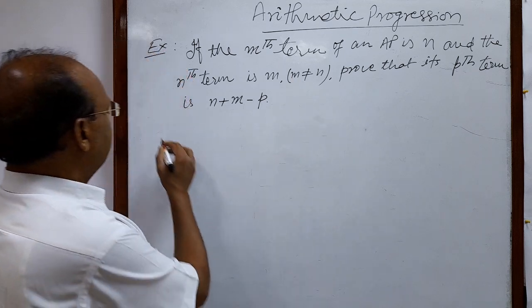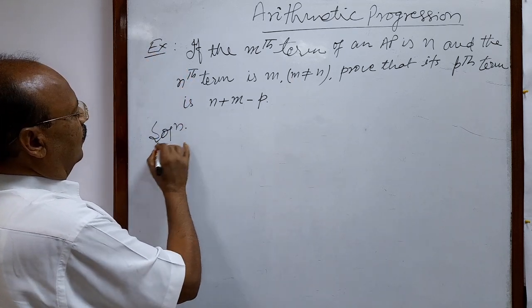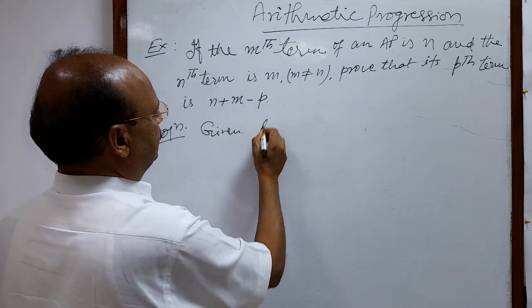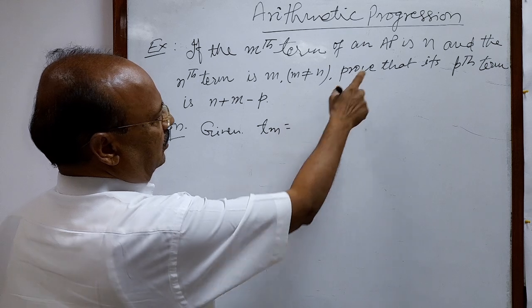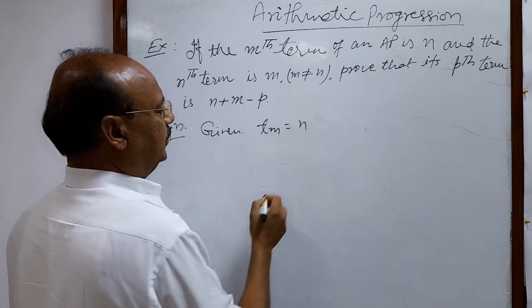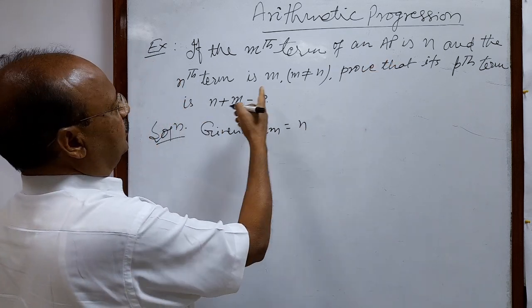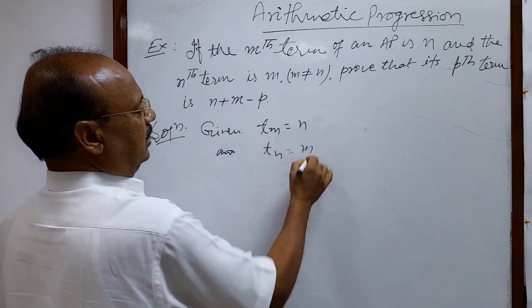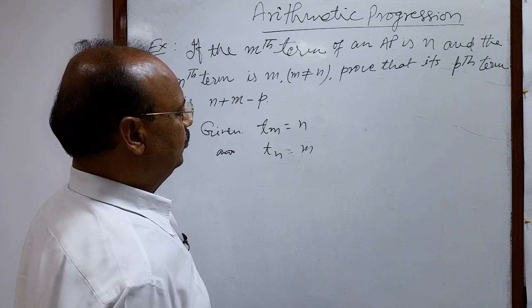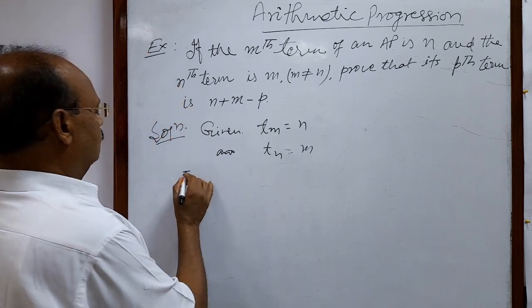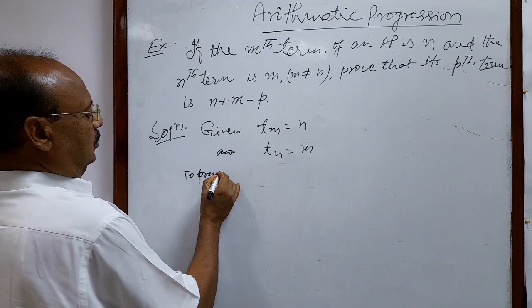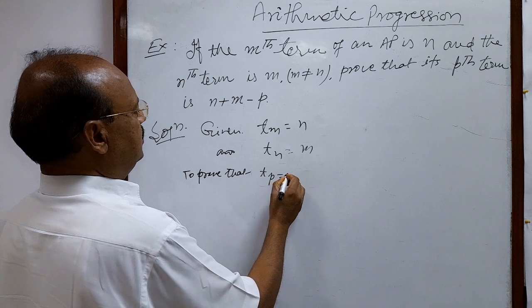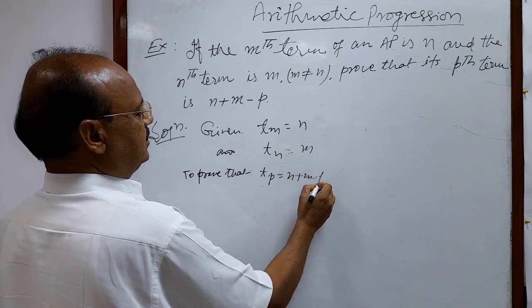Let us see how we can solve it. Given that the mth term Tm of an AP is n and the nth term Tn is m, we have to prove that the pth term Tp is n plus m minus p.